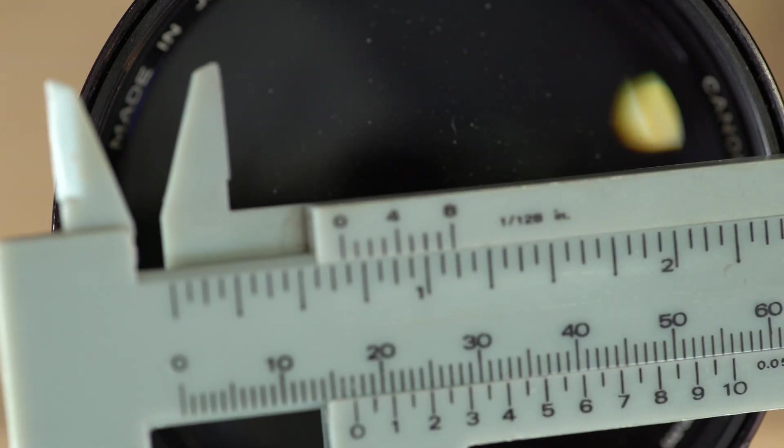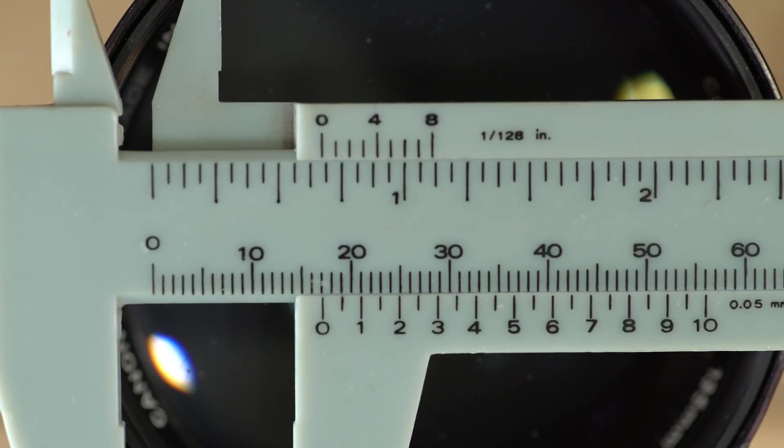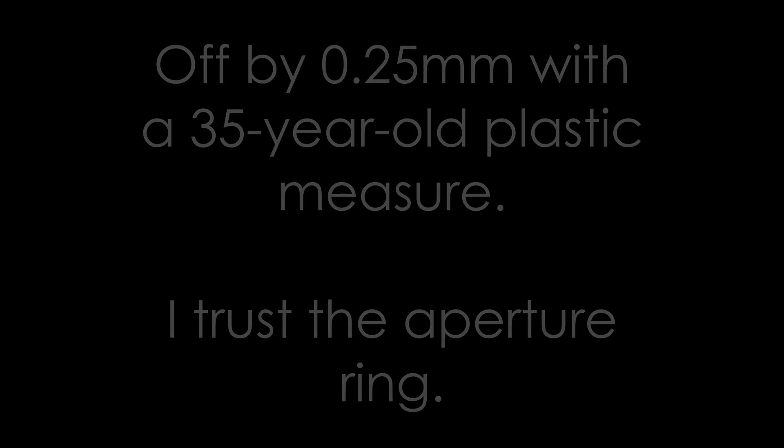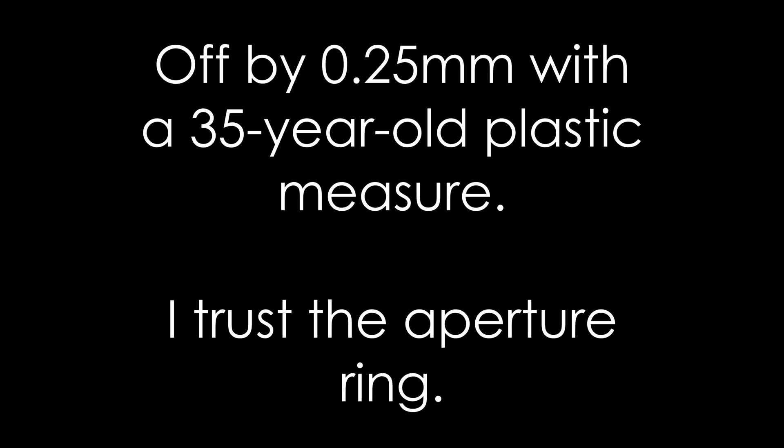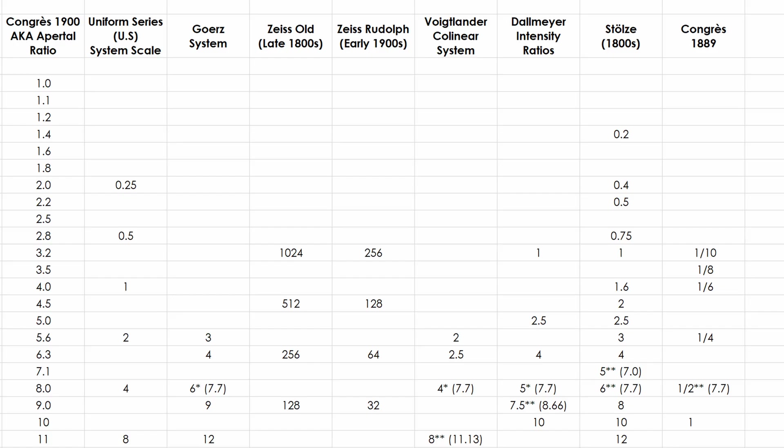If you're curious about the way that we notate apertures today, it's called the Congress — or "Kongress" — honestly I've only ever read it, never heard it out loud. The Congress 1900 system has been in place since 1900, replacing the Congress 1889 system.